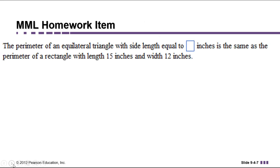Let's look at this example from our MyMathLab homework. The perimeter of an equilateral triangle with side length equal to blank inches is the same as the perimeter of a rectangle with length 15 inches and width 12 inches. Whenever you have a problem that mentions a geometric shape, it's a good idea to draw a picture. So let's draw an equilateral triangle, that means all the sides are the same, and a rectangle.